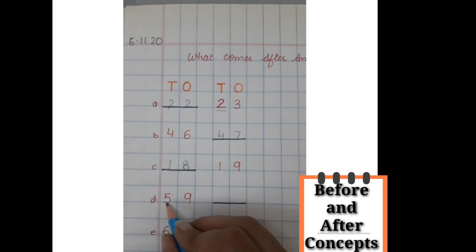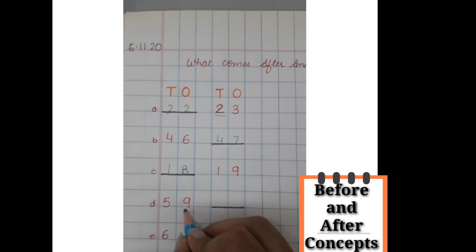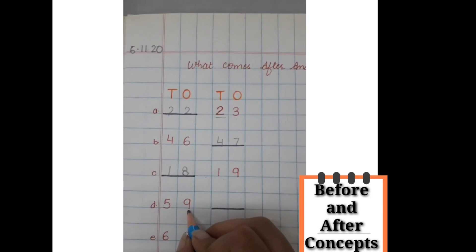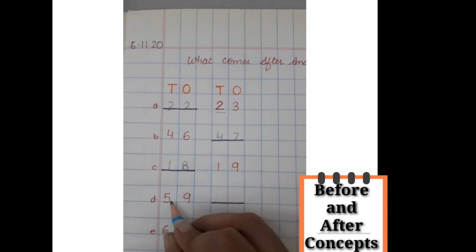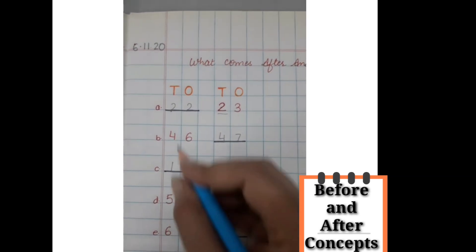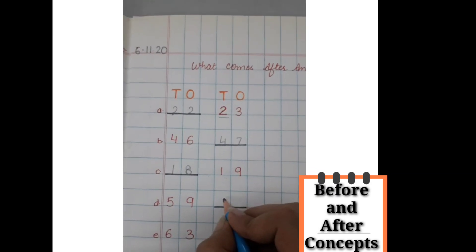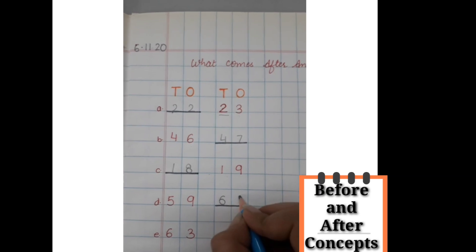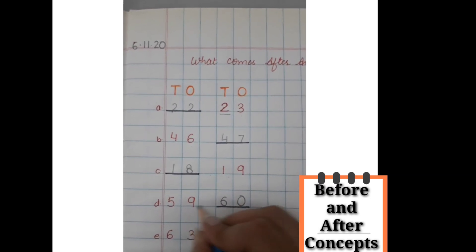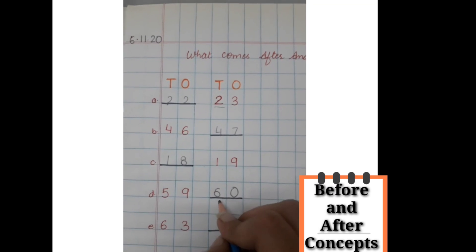Now we have here number 59. We have 9 in the ones place, so we have to go forward. With this 9, 50 at the tens place will also jump to the next number. So what comes after 59? 60. After 9 it is 0, and 5 has jumped to the next number.